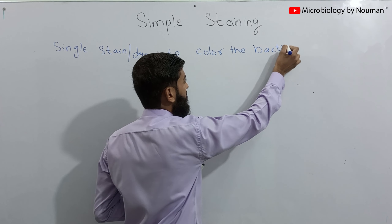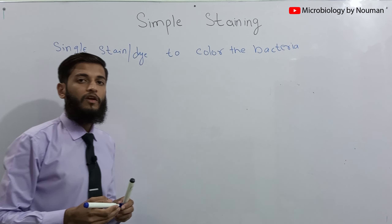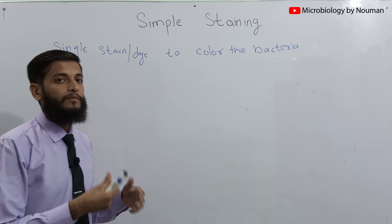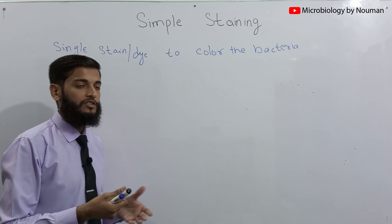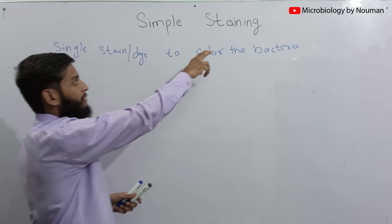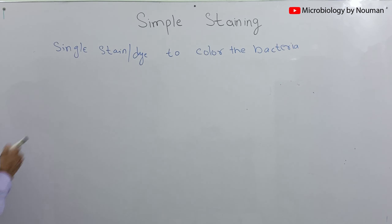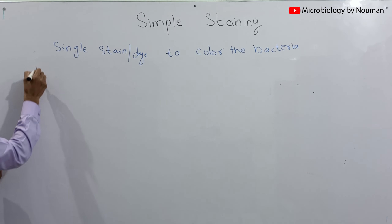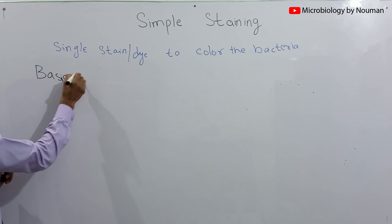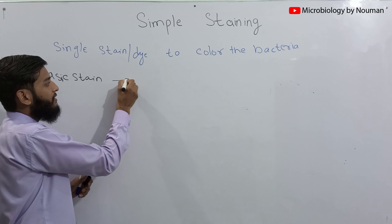After the staining method, all the bacteria present in a sample will appear in a single color depending upon the type of stain that we have used. In simple staining method, we use basic stains.